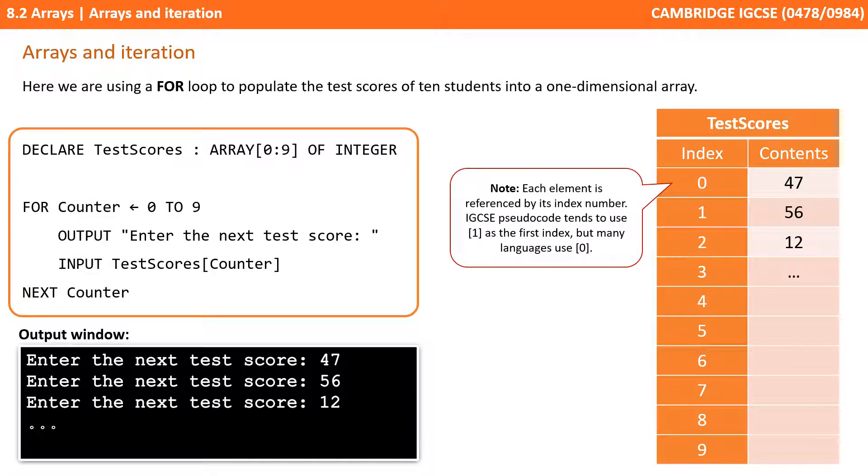Here we're using a for loop to populate the test scores of 10 students into a one-dimensional array. You can see we're using a for loop from 0 to 9, and each time around the loop we're saying enter the next test score. We then input the value into the test scores array at the counter position, which will be increasing each time around the for loop. We can see some example output at the bottom and the contents of the array filling up on the right.